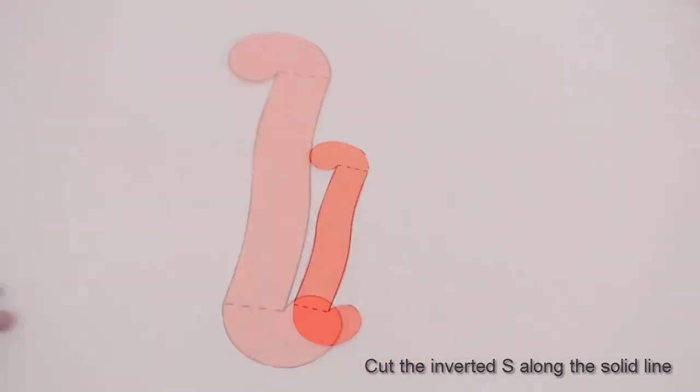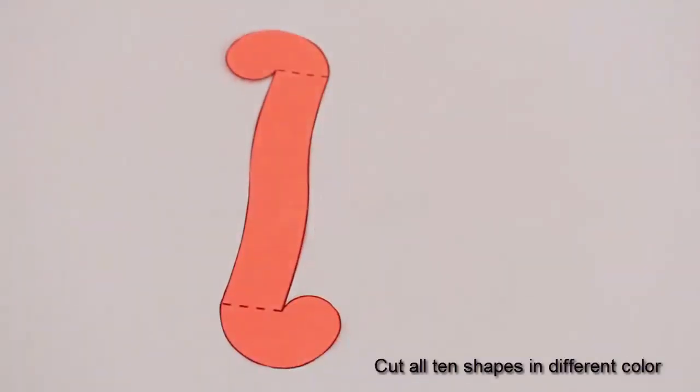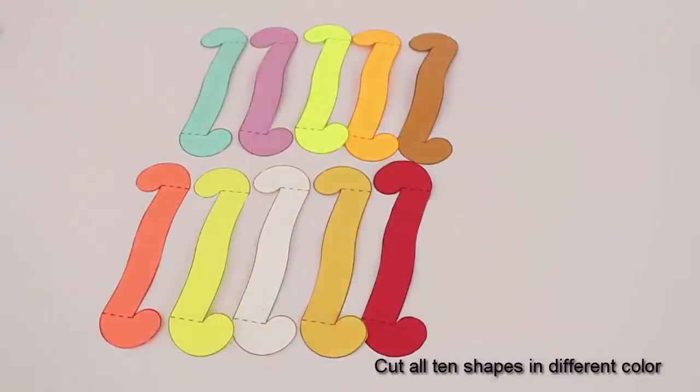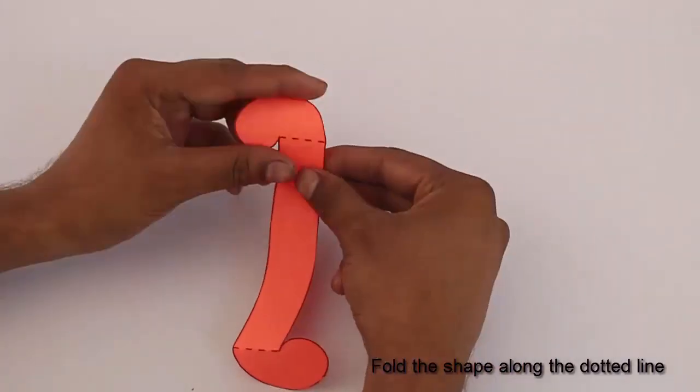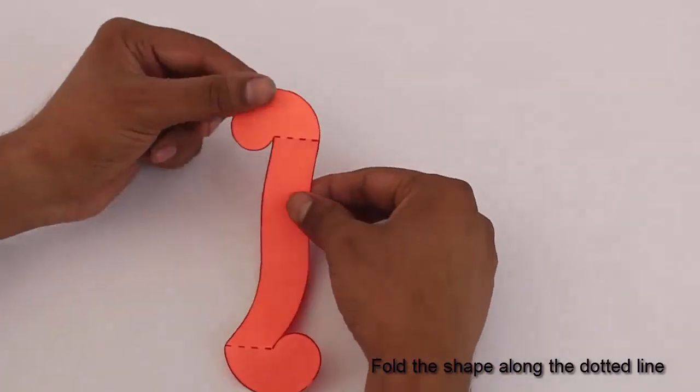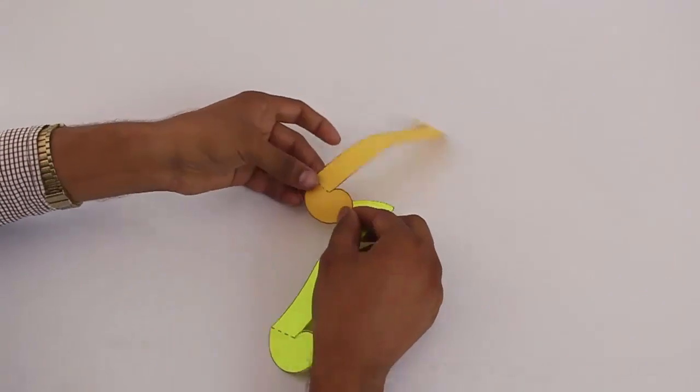Then cut all the 10 pieces along the outlines. Cut the inverted S along the solid lines. Cut all 10 pieces in different colors. Then bend along both the dotted lines.